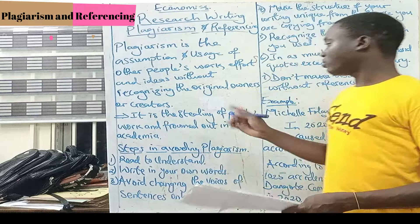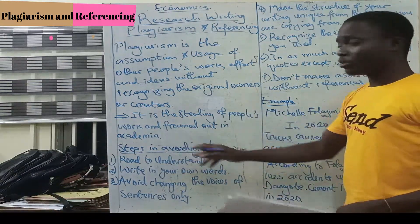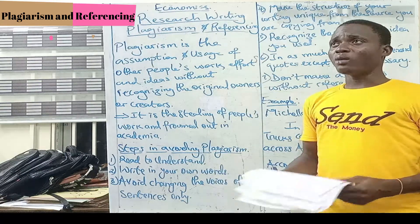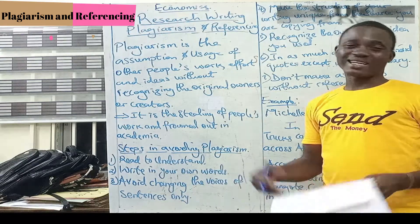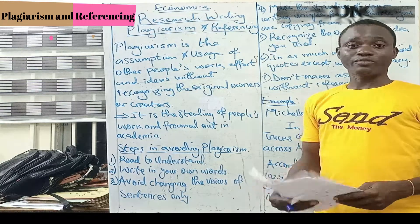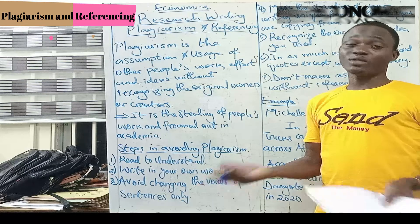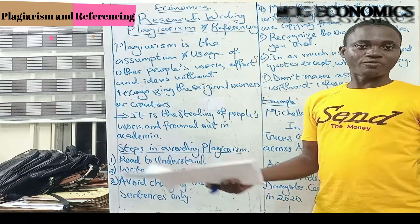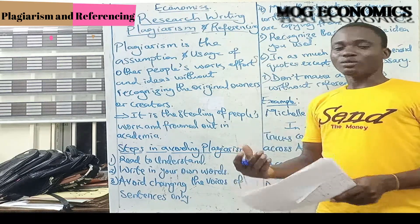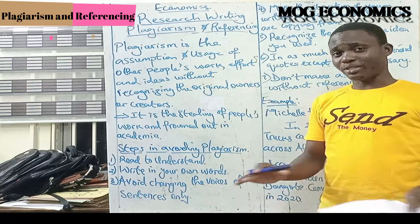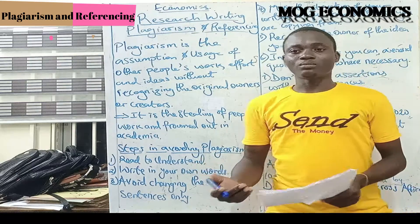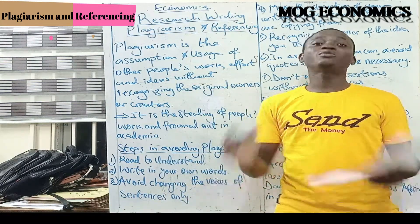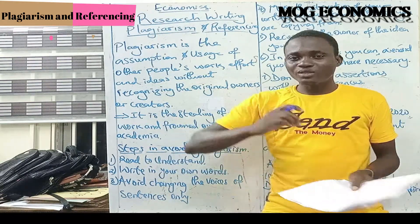Number one: read to understand. If you are given a document, remember reading comprehension passages when you were younger? In secondary school you would read a passage, the book is no longer there, and you have to summarize what you've read. That summary comes from your understanding of the passage. So when you have papers and journals you're using to put up your research work together, read the whole thing — maybe a paragraph or two — and write down what you've understood in your own words.